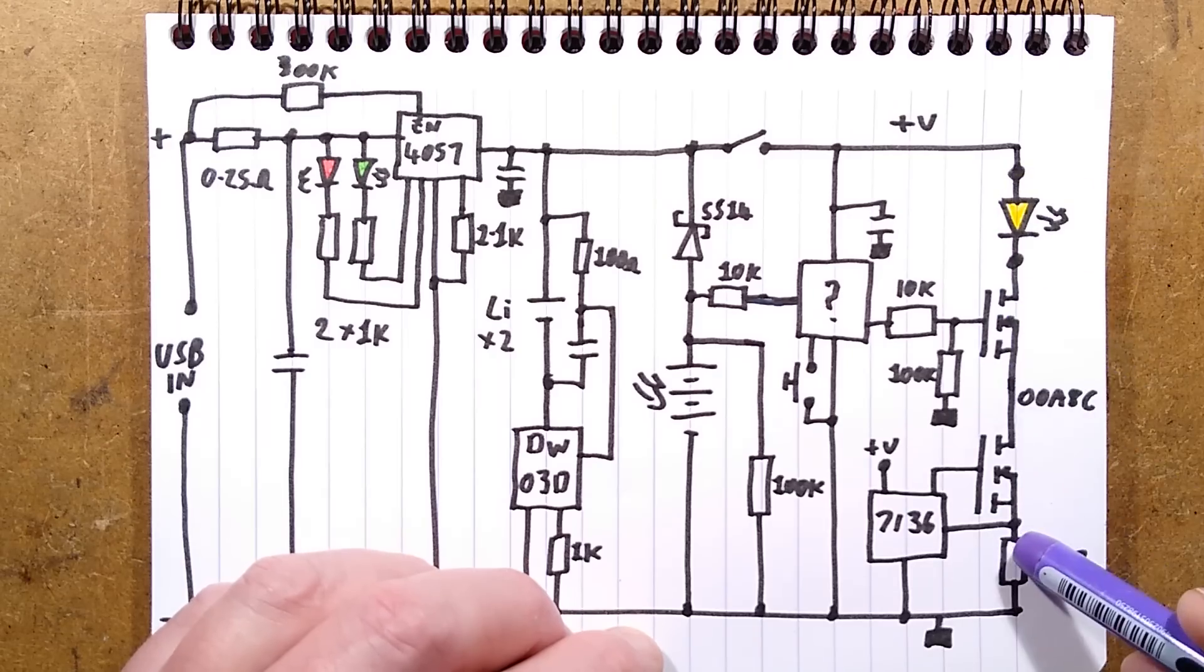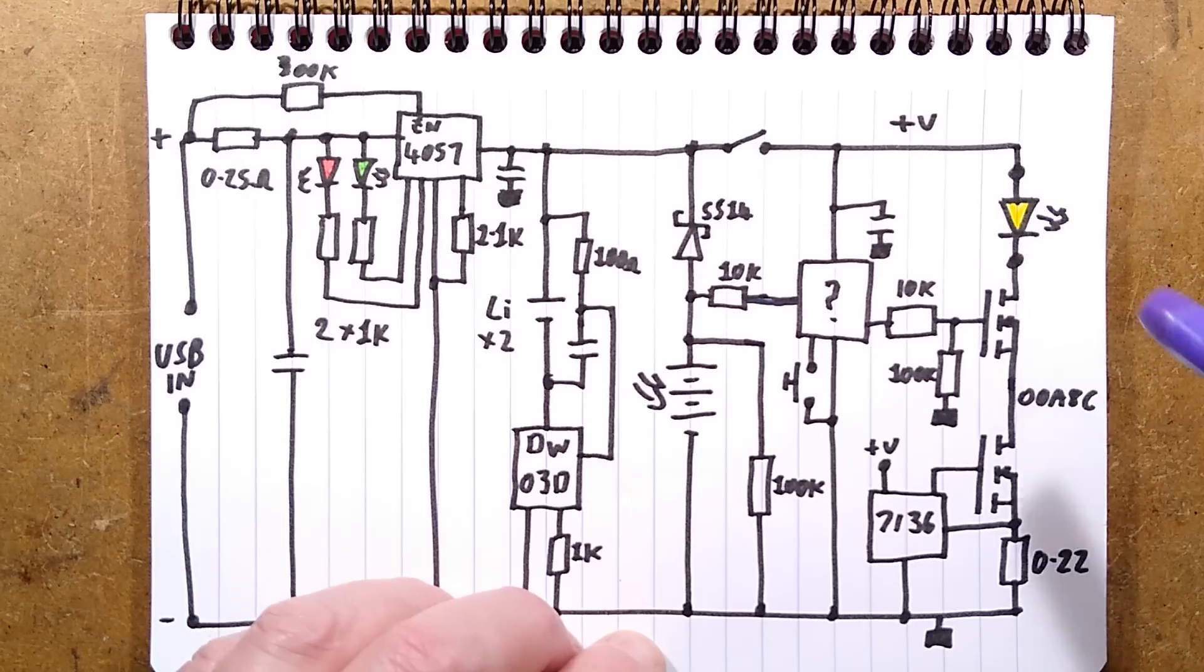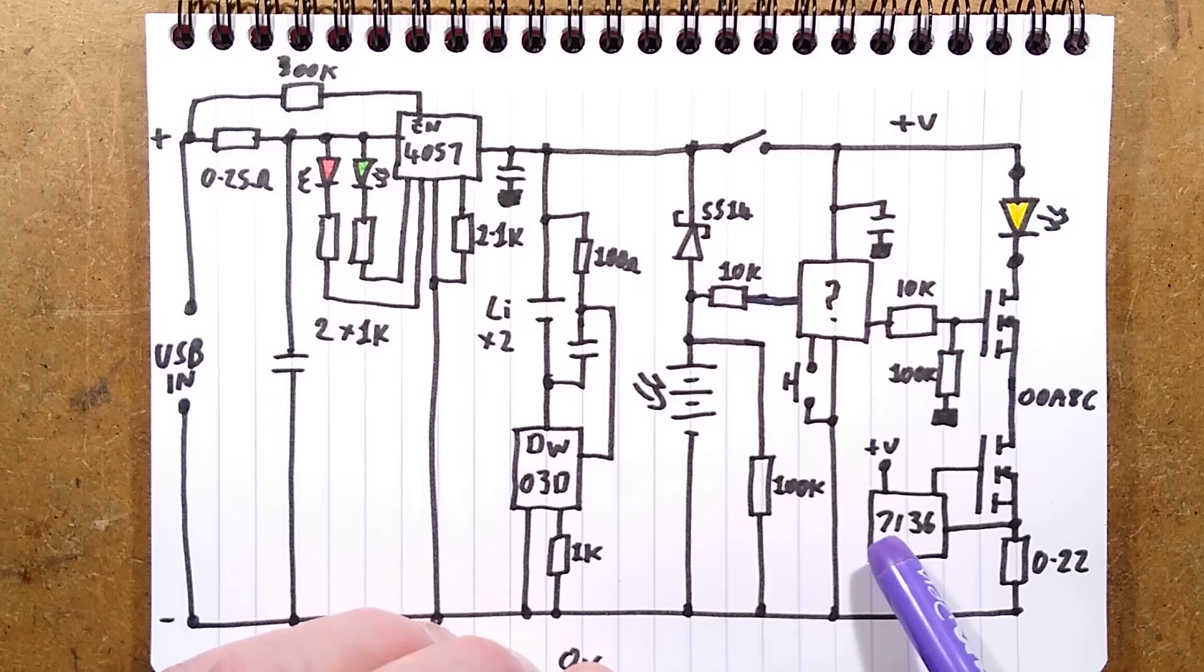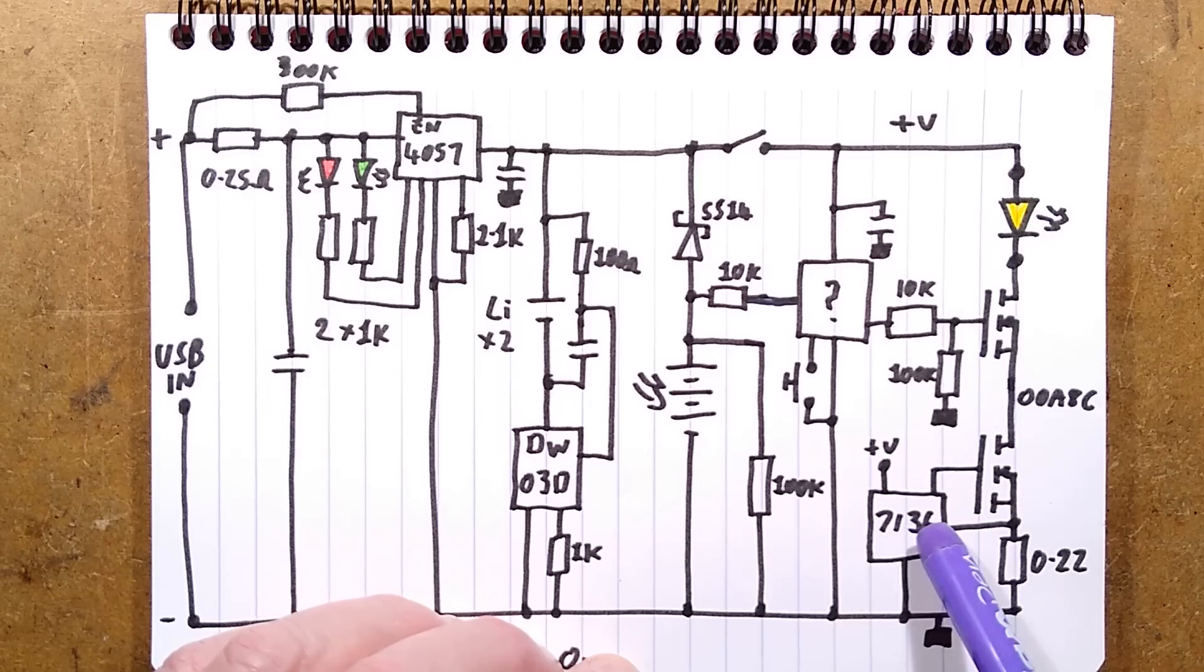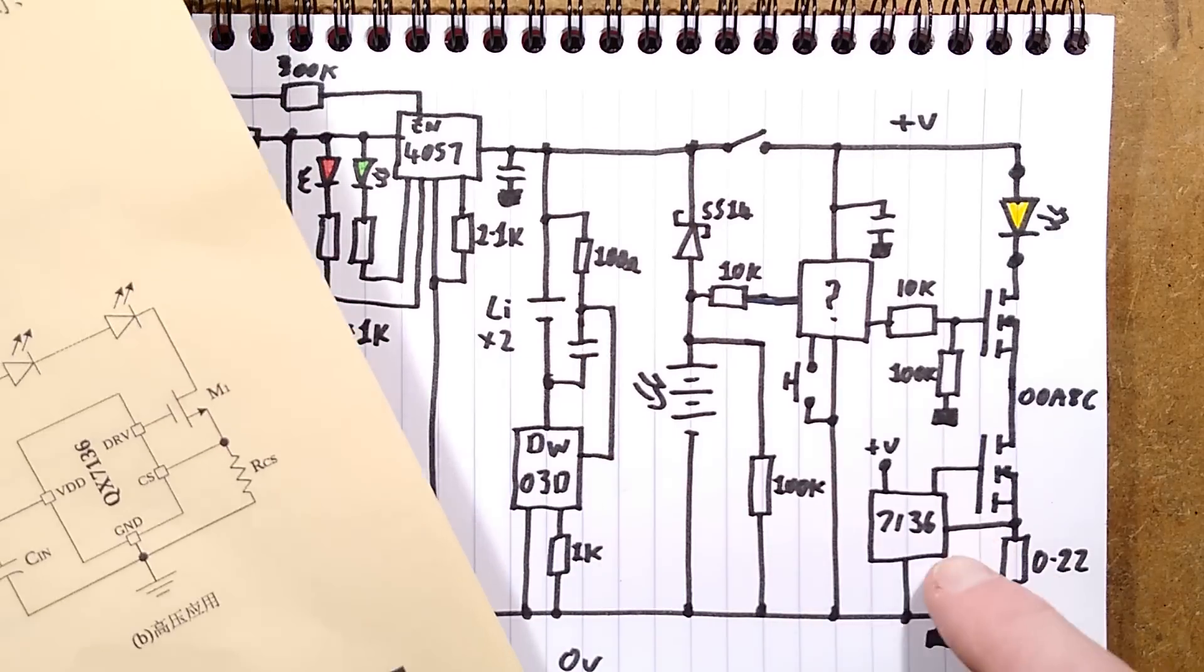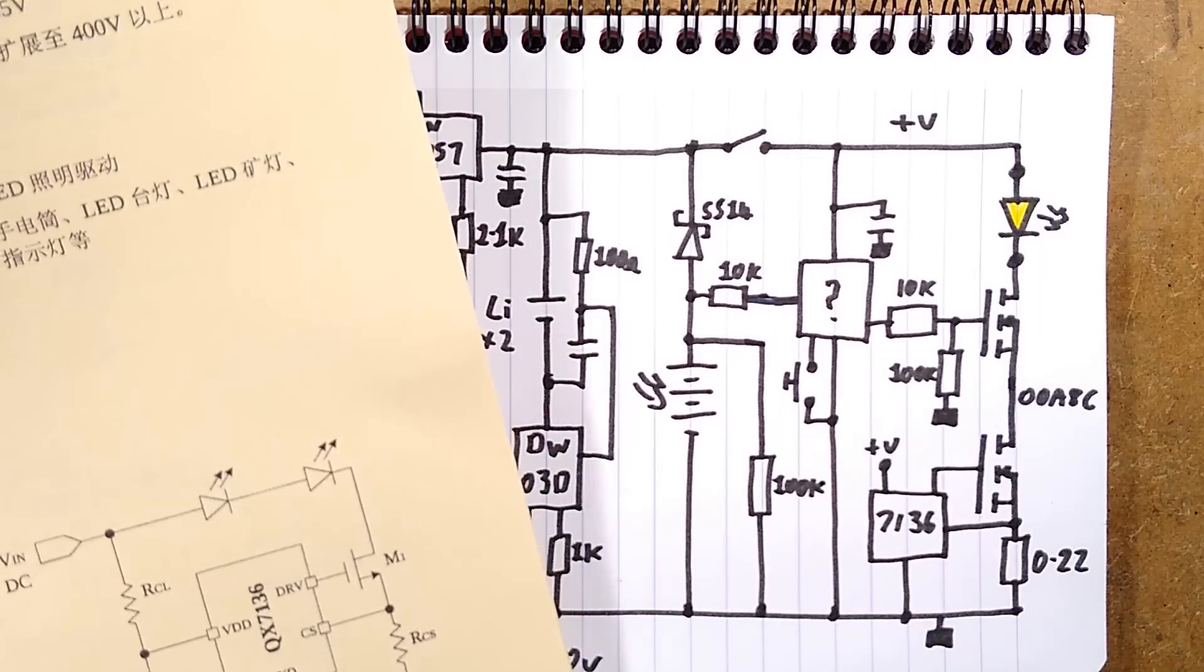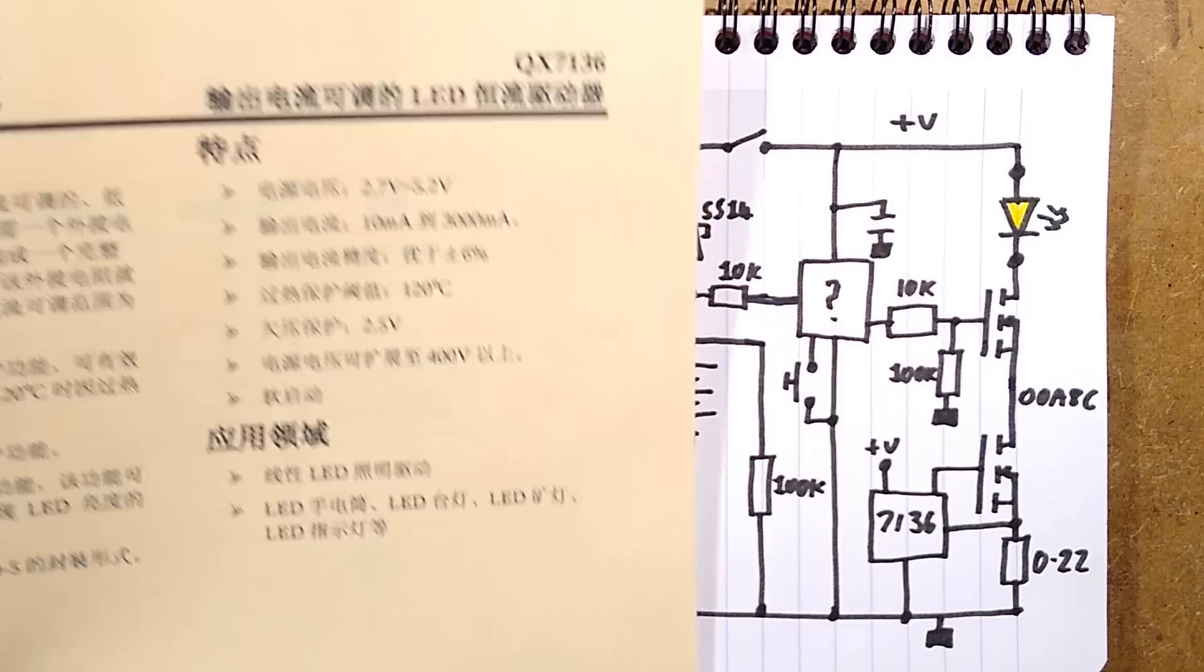When it turns the MOSFET on, there's a 100k pull-down resistor to keep the MOSFET off normally, then a 10k resistor to turn it on. But the current can't just flow straight through the LEDs and through that MOSFET. This is where most circuits would just have a resistor in series with the LED, but in this case they've used this D7136. There's a very similar chip that is just a simple 3.6 volt regulator, but it turns out there's an equivalent QX7136 which is a LED current regulator.